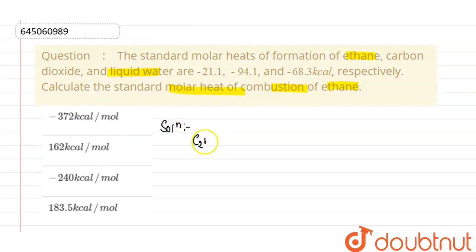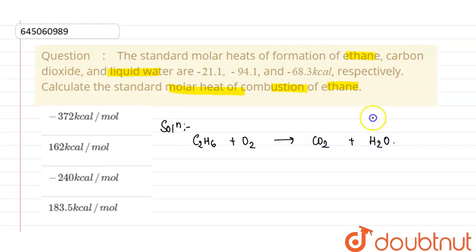So, it will be C2H6 plus O2 and it will give us CO2 plus H2O. Now, if we balance this equation, it will be 2 here, 7 here, and 4 CO2 and 6 H2O.